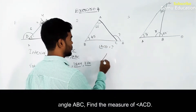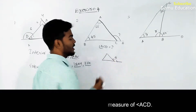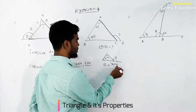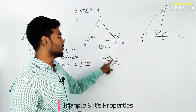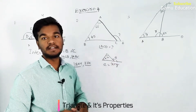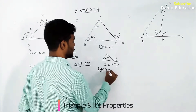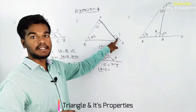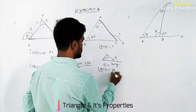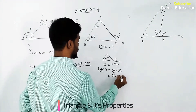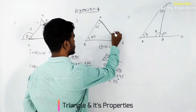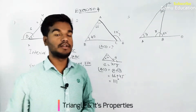Taking a triangle, the exterior angle E is equal to the sum of the two opposite interior angles X and Y. So angle ACD will be equal to angle A plus angle B, which is 66 degrees plus 45 degrees, giving us 111 degrees. That is how we find it using the exterior angle property.